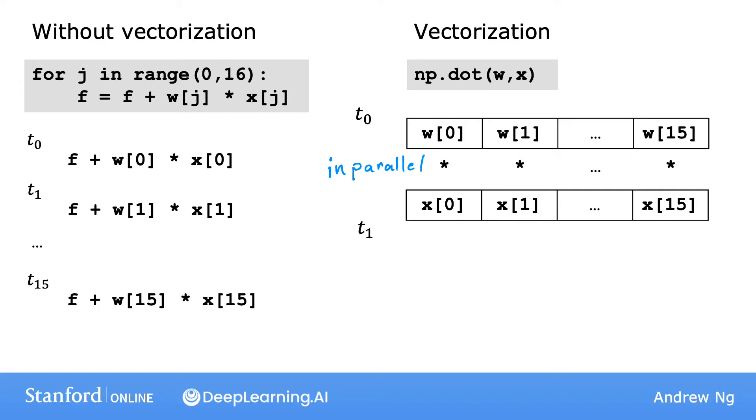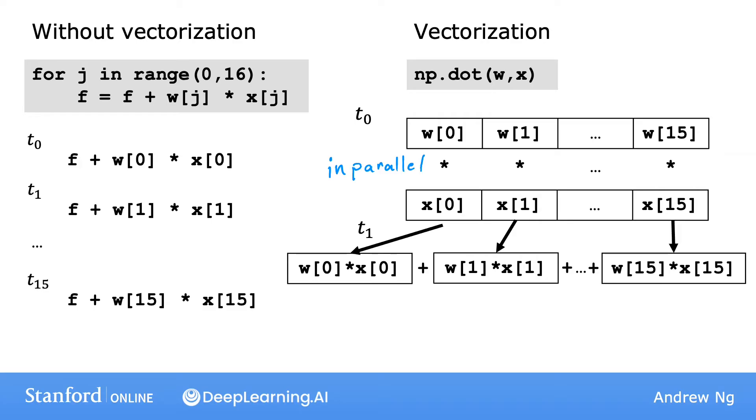Then after that, the computer takes these 16 numbers and uses specialized hardware to add them all together very efficiently rather than needing to carry out distinct additions one after another to add up these 16 numbers. This means that code with vectorization can perform calculations in much less time than code without vectorization.